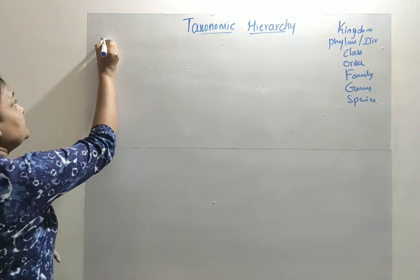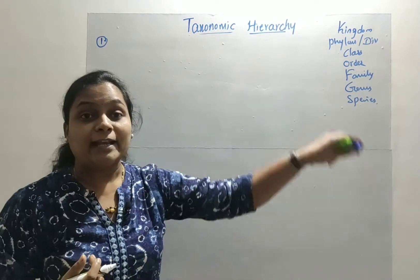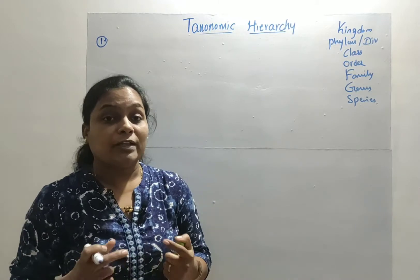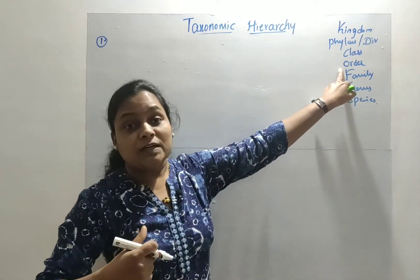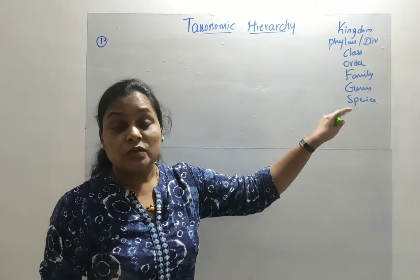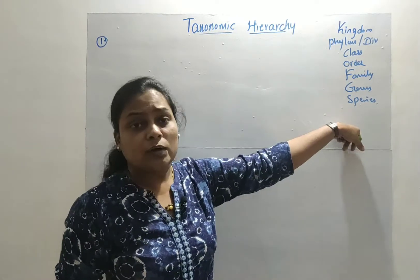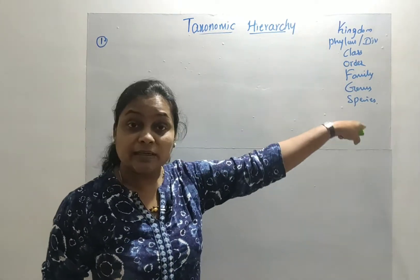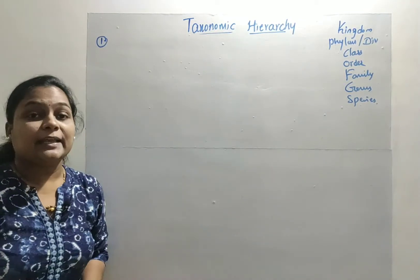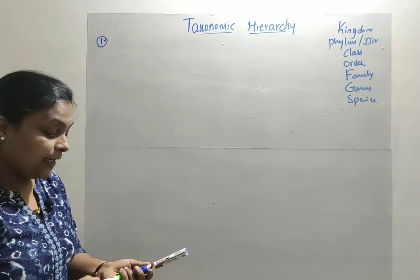I'll give you five main tricks to remember this taxonomic hierarchy. The first trick is about how to remember the sequence of categories, because many students get confused about whether Order comes before Family, or whether Family is followed by Genus. You need to remember the sequence of categories, and for this, we use a mnemonic.